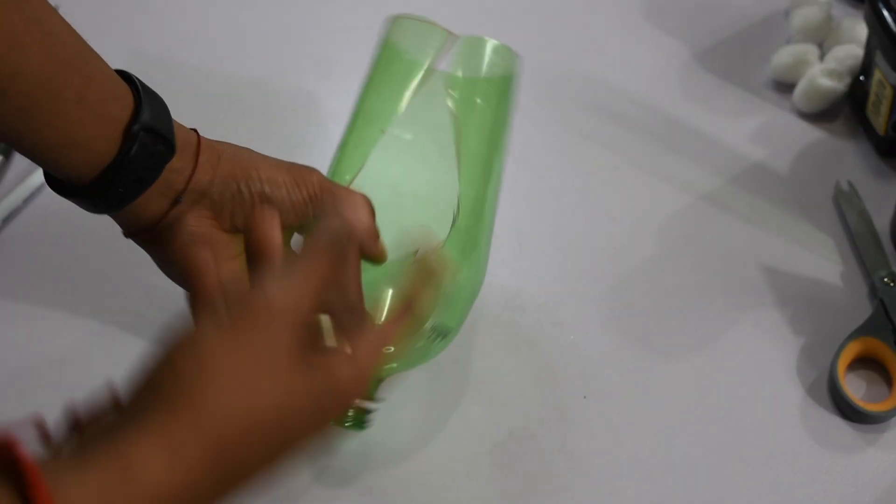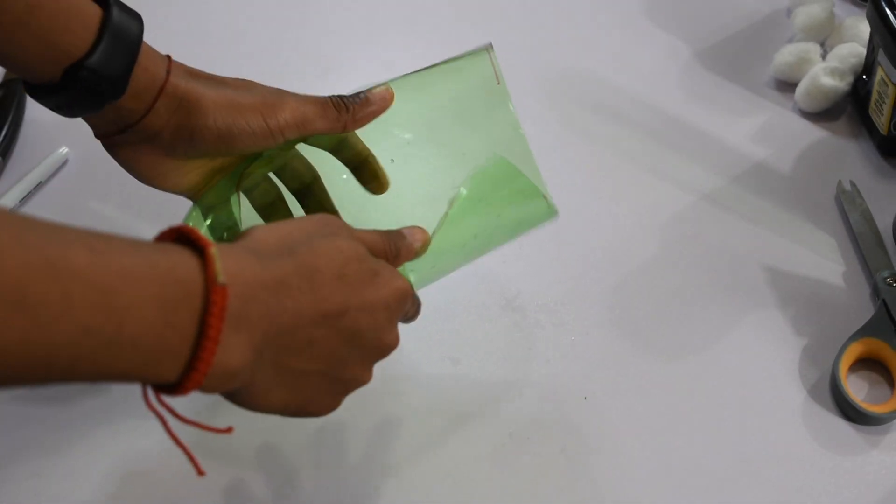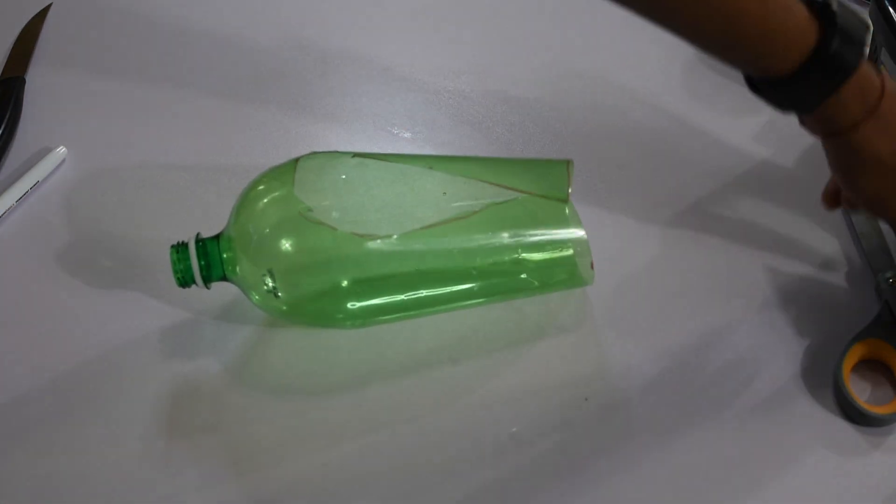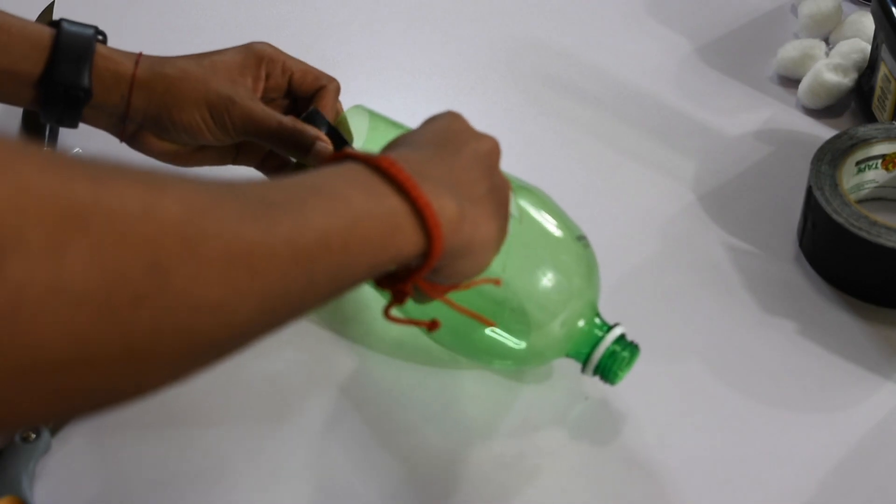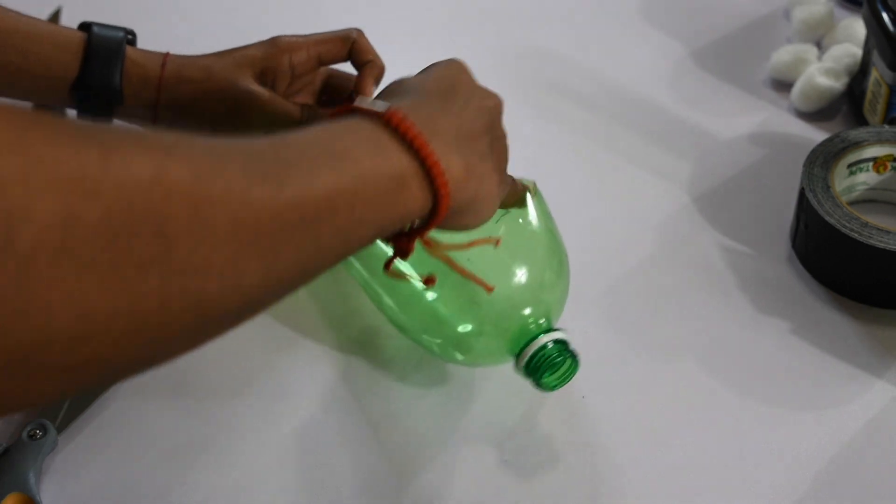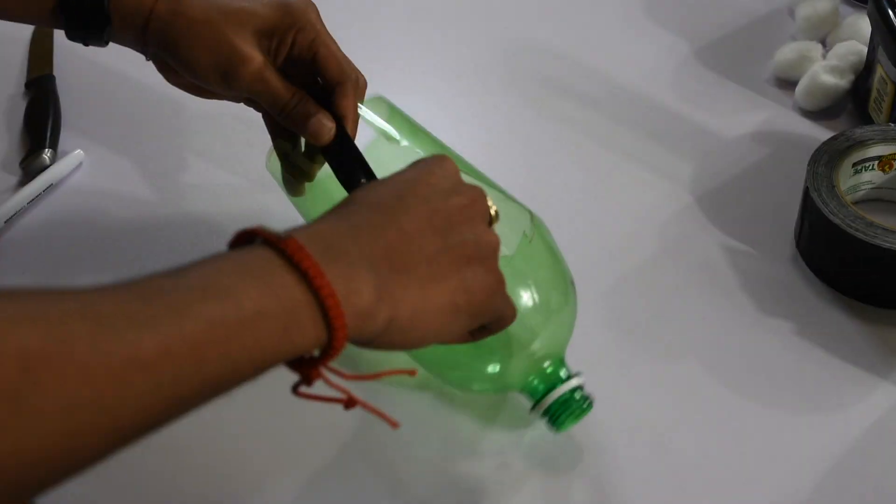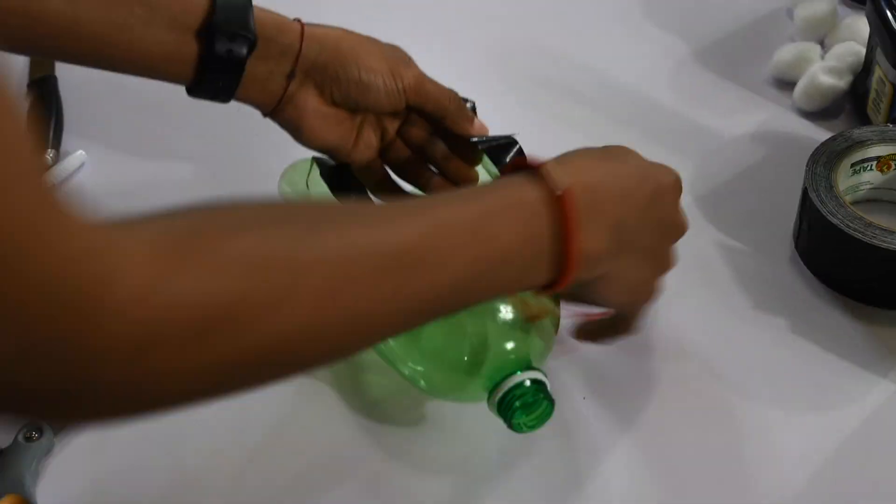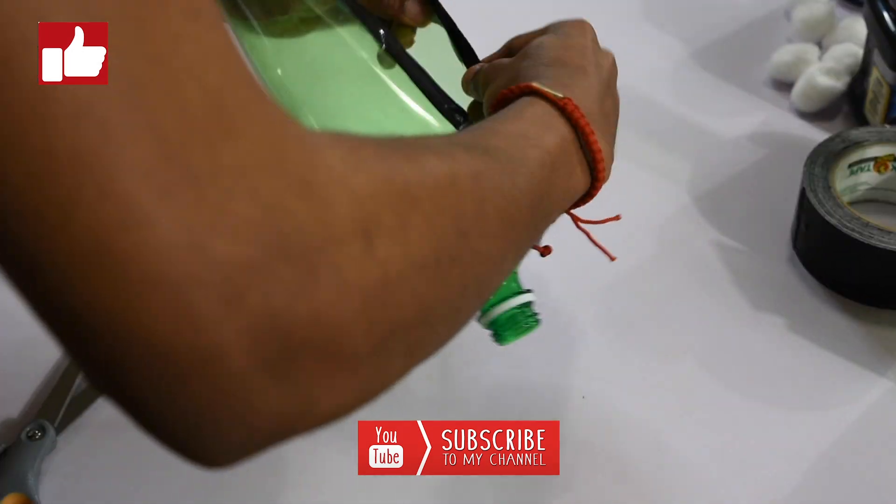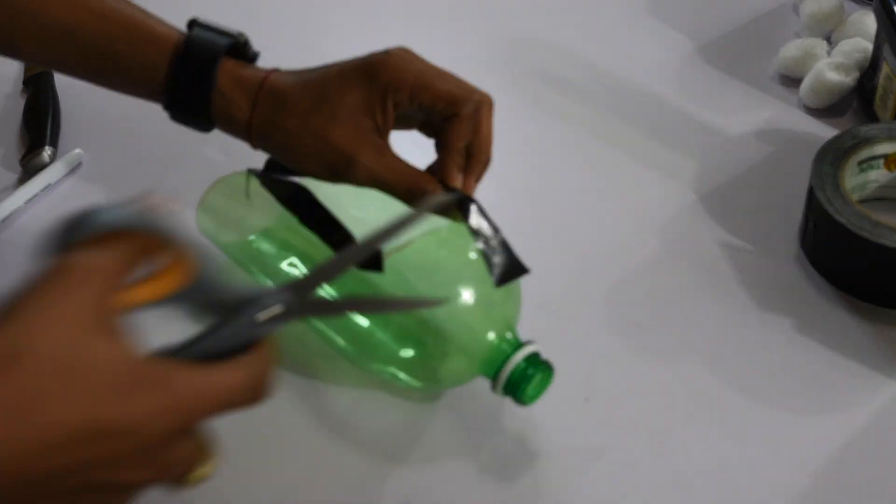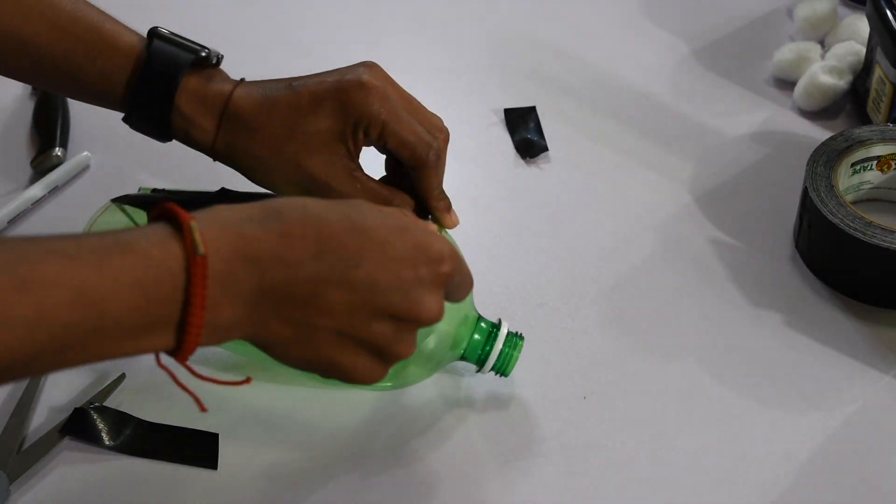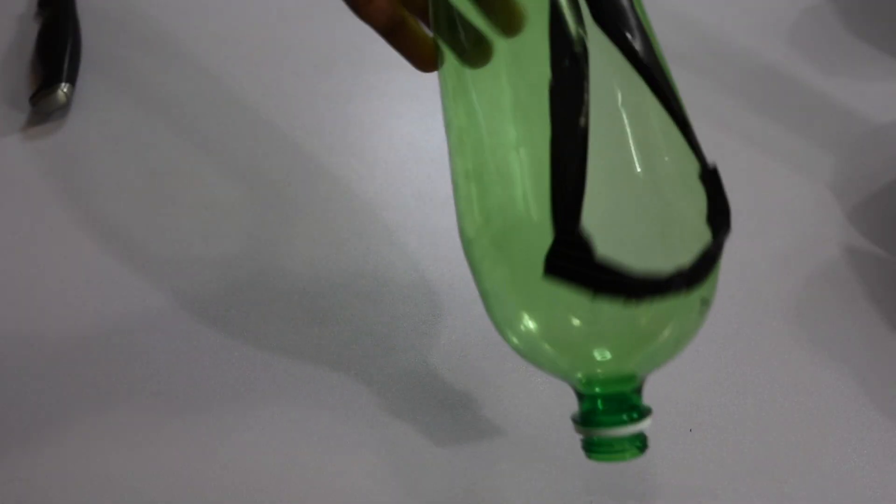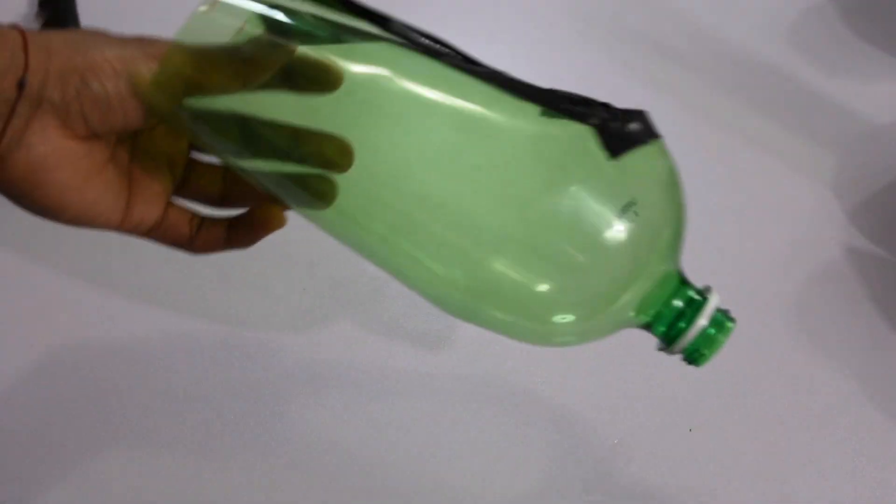So once you've finished cutting out your outline, you're going to have something pretty much like this, and this is pretty much your base of your mask. And next, you see how the edges are super rough? We're going to take some of our duct tape right here and then we're going to put it around the edges so it could fit nicely on our face. Just fold it in so it could fit nicely.